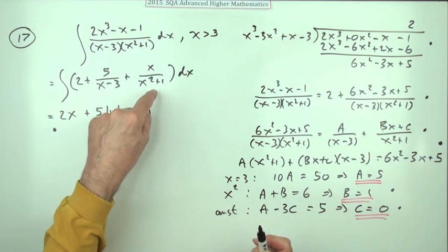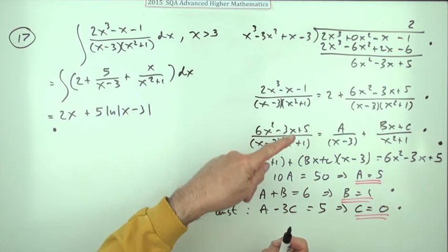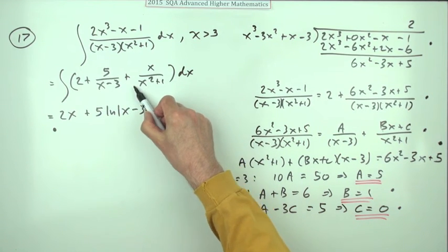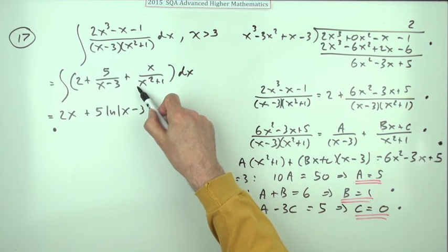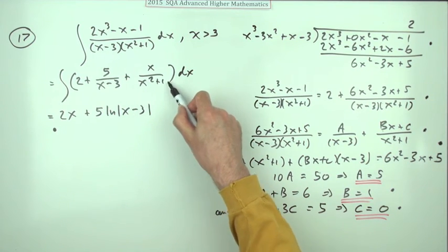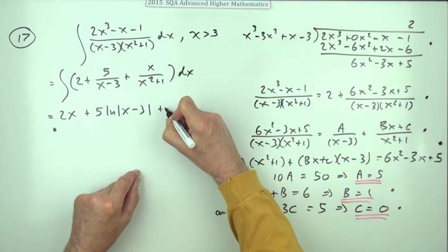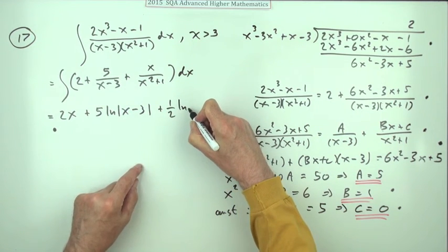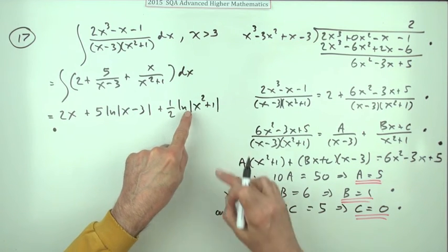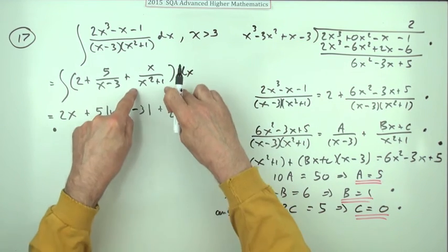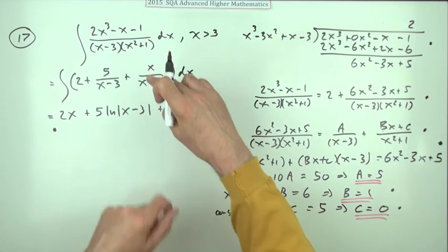But what about this term? Well, this can be done by inspection. You can set it all out if you like, but the top is related to the derivative of the bottom. The derivative of the denominator is 2x, that's simply x, so that must just be a half of ln(x² + 1). The derivative of ln that goes to the denominator, and then you multiply by the derivative which is 2x, but you're halving it, so it's x.